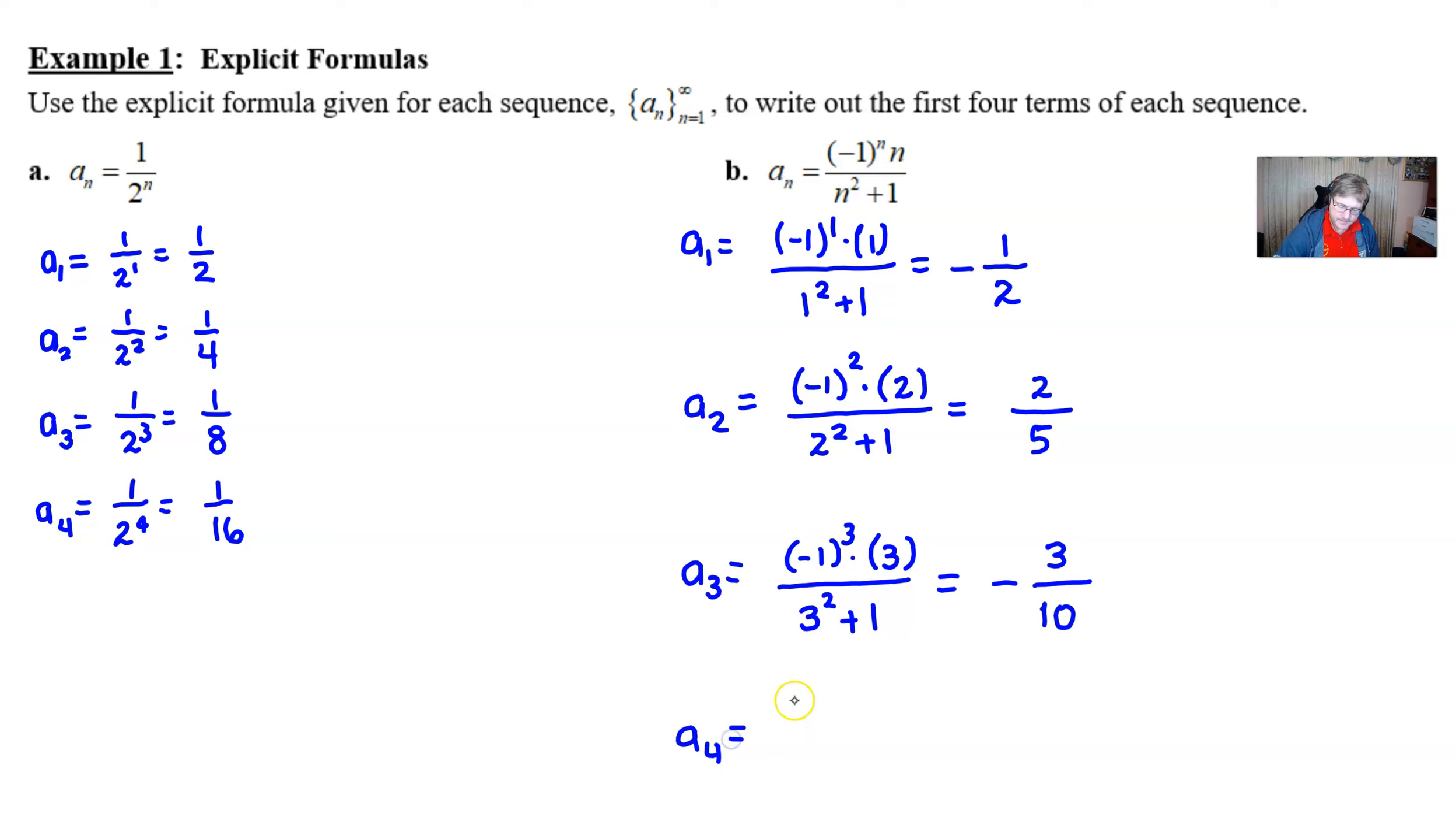And lastly, the fourth term, negative 1 to the 4th times 4 all over 4 squared plus 1. Now, the negative disappears once more because of the even exponent. 4 remains on top, and 4 squared plus 1 is 17.